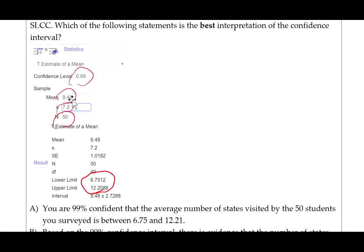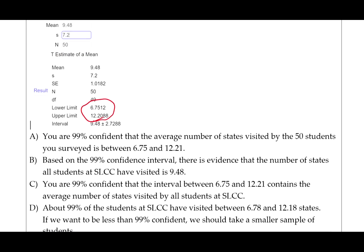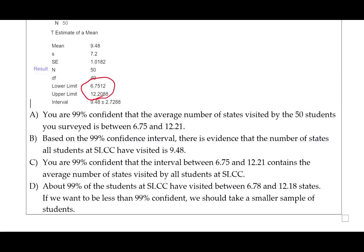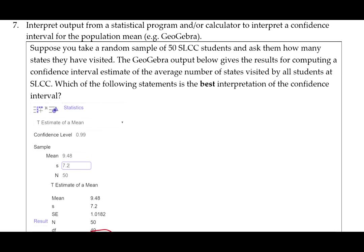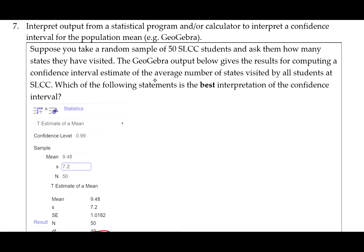We are going to need to do our interpretation. We'll need the confidence level and this interval. Remember that to interpret a confidence interval, you need to talk about how confident you are that the interval captures the parameter. The parameter we are interested in is the average number of states visited by all students at Salt Lake Community College.